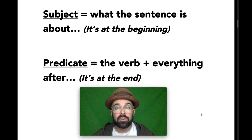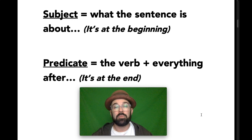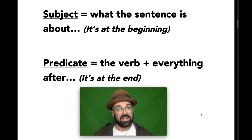The predicate of the sentence is the verb plus everything that comes after the verb, so of course it's at the end of the sentence. It includes the verb or the verb phrase, and also all of the words after that. Both of these are important to understand in order to understand linking verbs.